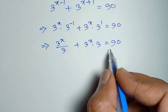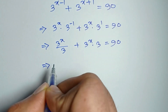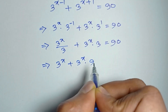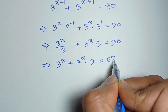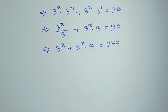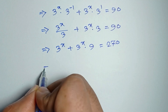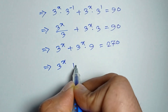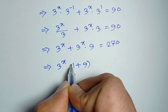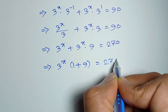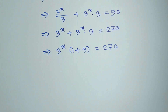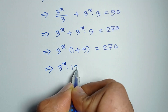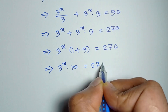If we multiply both sides by 3 we get 3 to the power x plus 3 to the power x times 9 is equal to 270. Or if we take common 3 to the power x, we get 3 to the power x into 1 plus 9 is equal to 270. Or 3 to the power x times 10 is equal to 270.